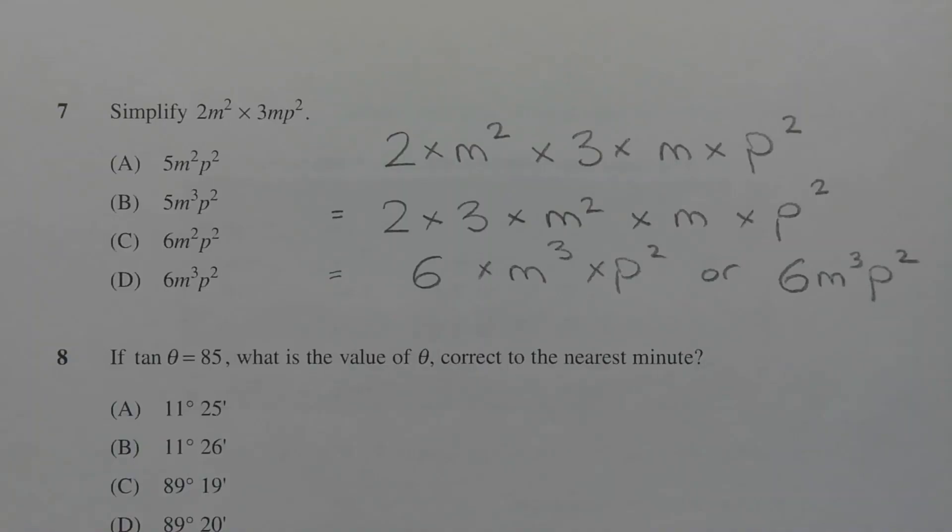To make the simplification a little easier, we can express 2m squared times 3m p squared using a more expanded form.